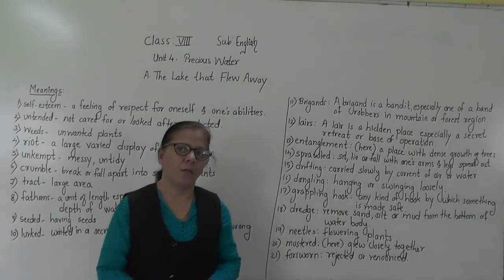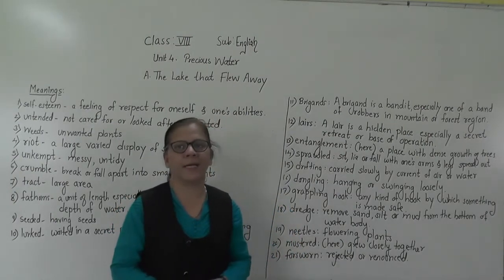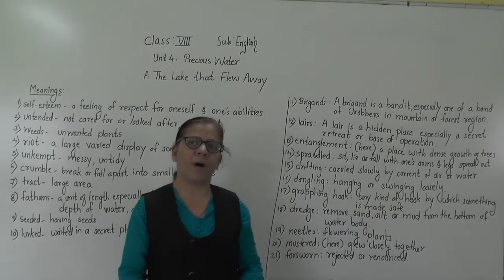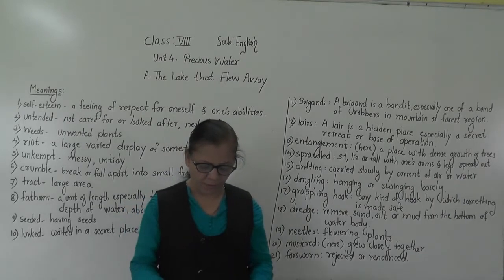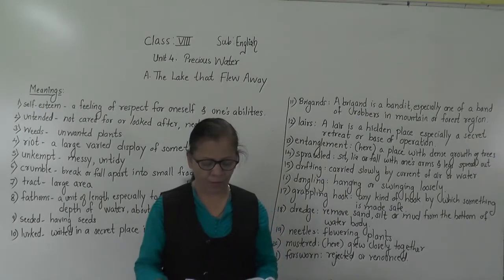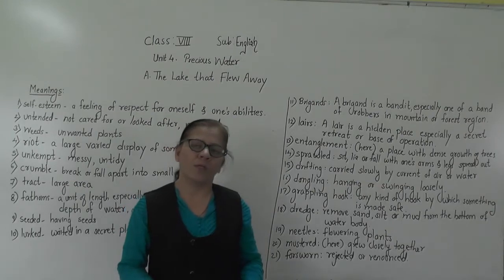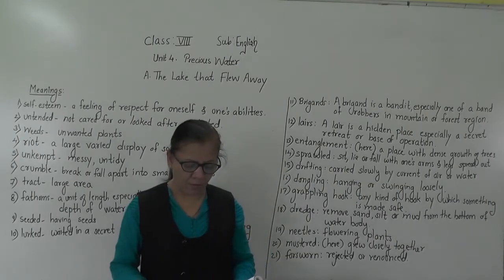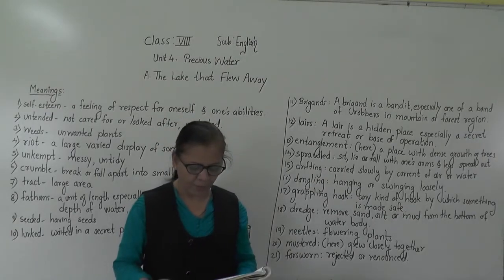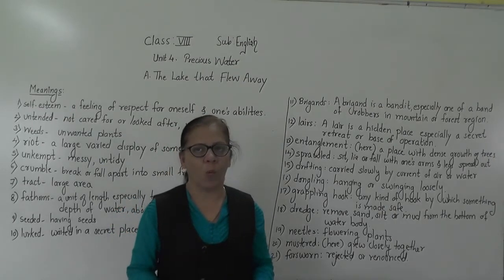Now in your book, a bar diagram is given. So let us study that bar diagram and see what is given in it. The first bar is about total global water. In that, 2.5% of water is fresh water, 0.9% is saline water, and 96.5% is ocean water.